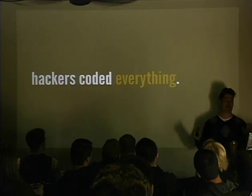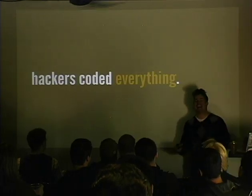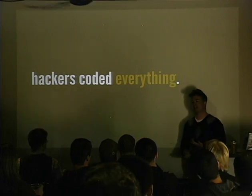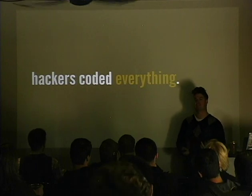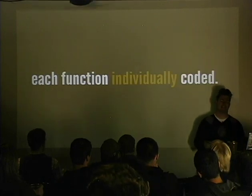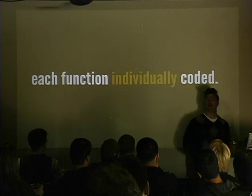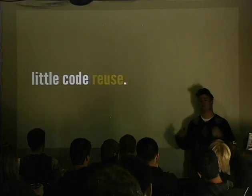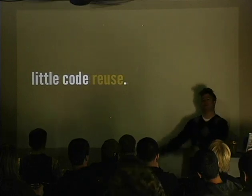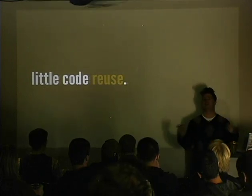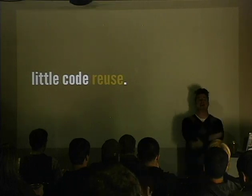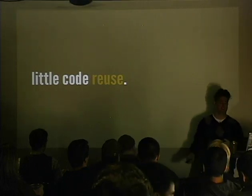Back in Richard Stallman's day, hackers coded everything. Every single aspect of the application was developed by one person, and that person was responsible for it. Each function was individually coded - there was no concept of reusable code. You would code the same exact wheel that someone else would code. Over time, people started saying: why are we doing this? Why don't we just code one thing, a standard library, and use that across the entire system?